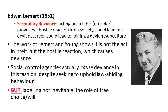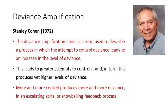The work of Jock Young shows how it is not the act itself, but rather the hostile reaction which causes deviance. Social control agencies actually therefore cause deviance in themselves in this fashion, despite seeking to uphold law-abiding behaviour. If social control agencies such as the police did not engage in typification, stereotypes, and labelling, perhaps we would see less crime and deviance. But labelling is not inevitable — not all labels are fully communicated, sometimes individuals don't realise they have been labelled, and sometimes people reject the label. So there is a role here for free will and personal choice.